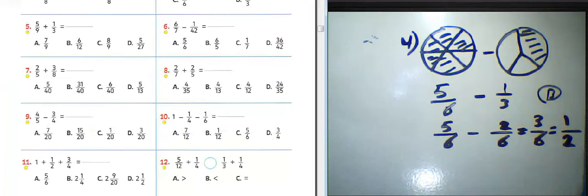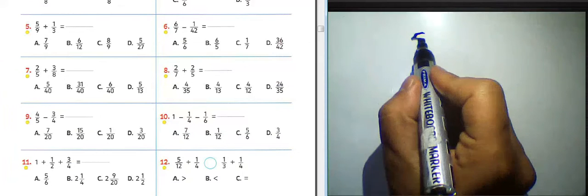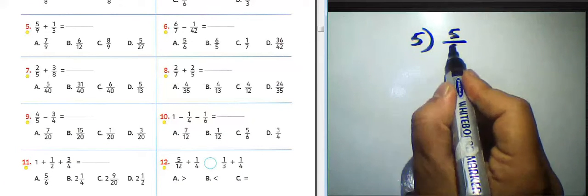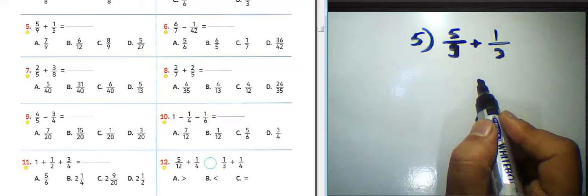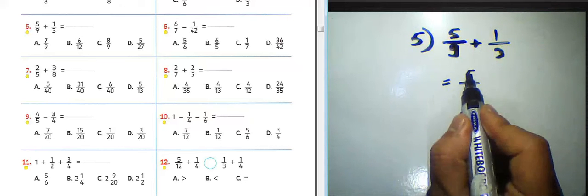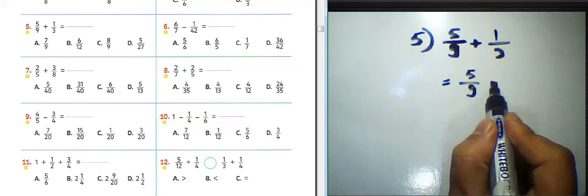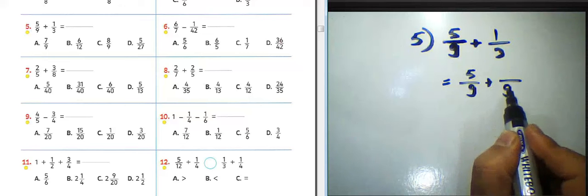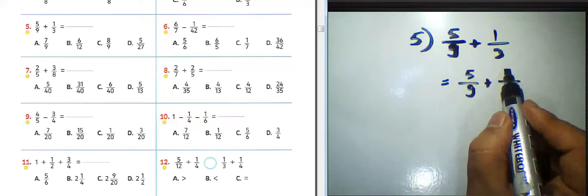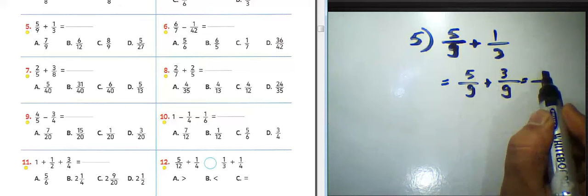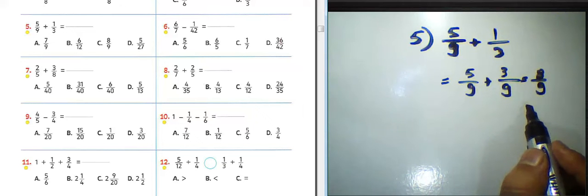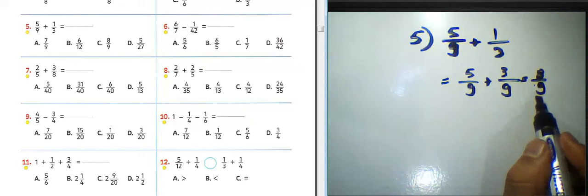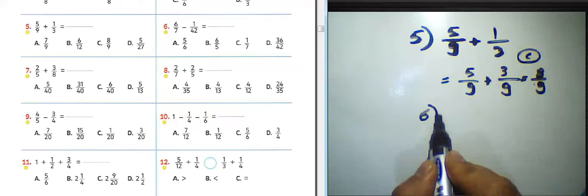Now question number five: 5 over 9 plus 1 over 3. We can find the least common multiple between them, which is 9. 9 divided by 3 equals 3, and 3 times 1 equals 3. So the result will be 5 plus 3 equals 8, and we write 9 in the denominator. The result will be 8 over 9. Choose letter C.